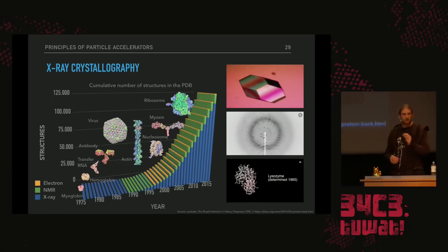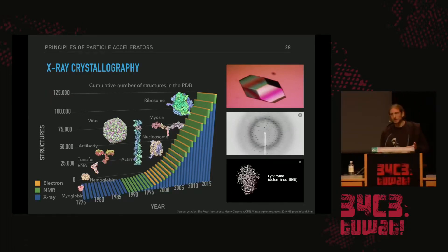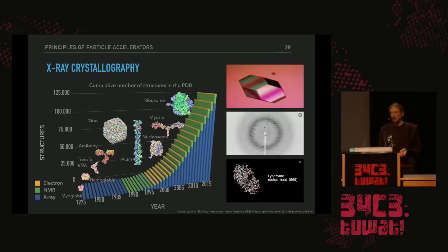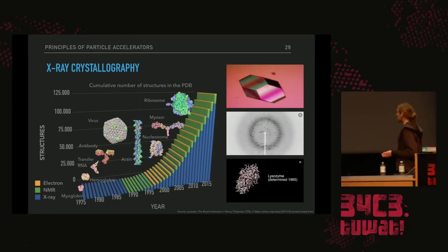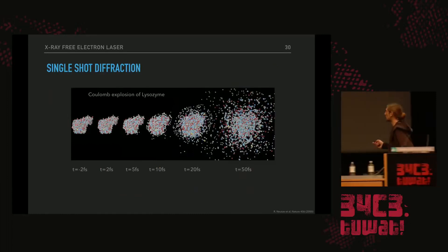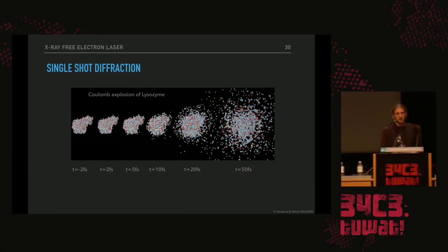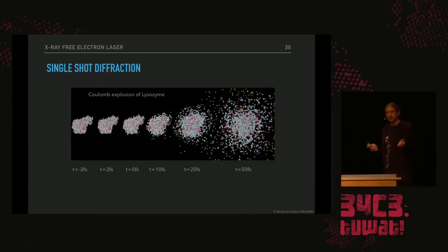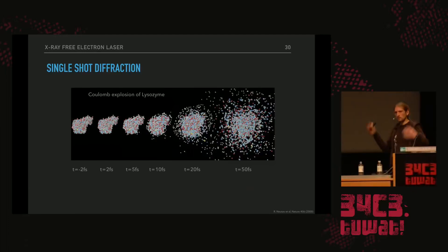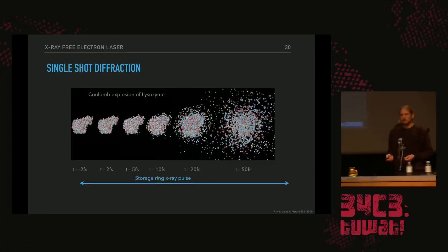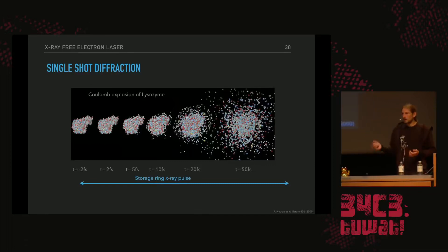Ideally we want to image a very small crystal or even a single molecule, but that requires 100 million times more photons. And if we imagined a storage ring bright enough to image a single lysozyme molecule, this is what would happen: a Coulomb explosion. As the X-ray beam hits the sample it immediately strips all electrons from the molecule, leaving positively charged nuclei that repel each other, blowing the molecule apart. Because of fundamental beam dynamics, storage ring pulses can't be shorter than about a picosecond — so we would just see a blurry picture of an explosion.